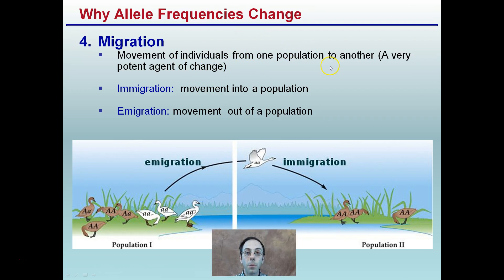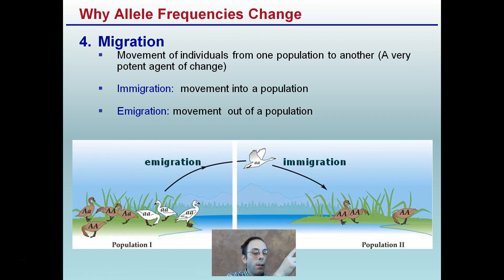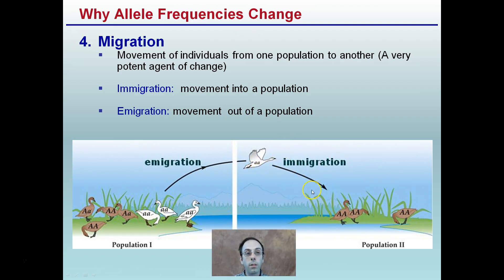Migration is the movement of individuals from one population to another and is a very potent agent for change. Immigration is movement into a population, and emigration is movement out of a population. For example, a homozygous recessive bird emigrates from one population and immigrates into another population of all homozygous dominant individuals. Assuming it survives and reproduces, this individual will increase the allele frequencies of the recessive allele in that new population.